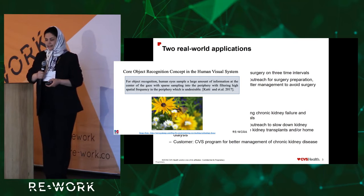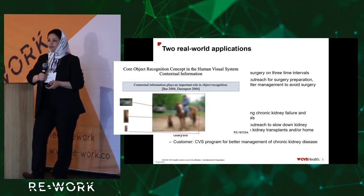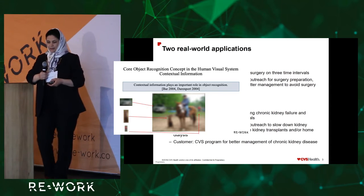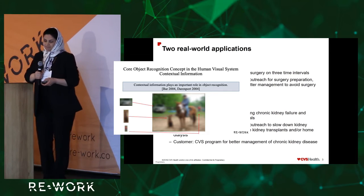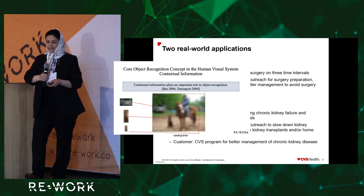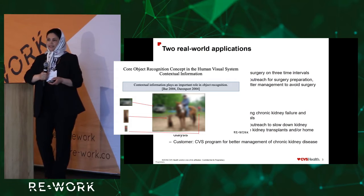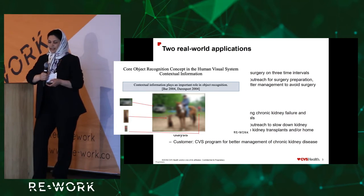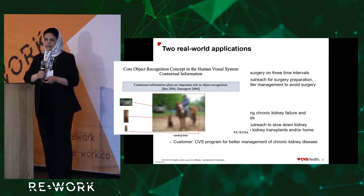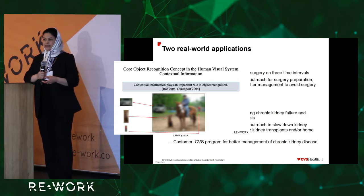The second line of evidence is that contextual information plays an important role in object recognition. For example, can you guess what this object could be? It's hard to say. Let's try another object with a different aspect ratio — still very hard to understand, and this one is even harder due to its scale. But if you have the original image showing the scene context, you can detect the objects easily. For example, this one is a car, this one is a dog, and this one is a human.